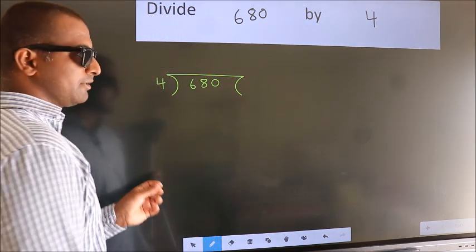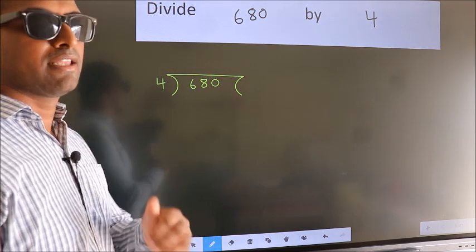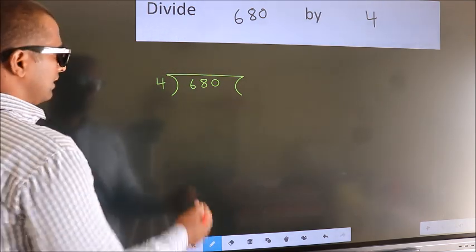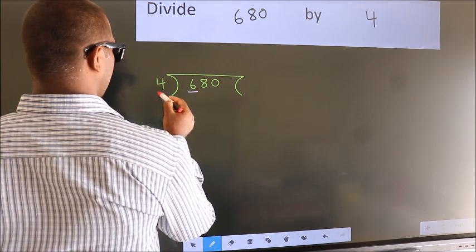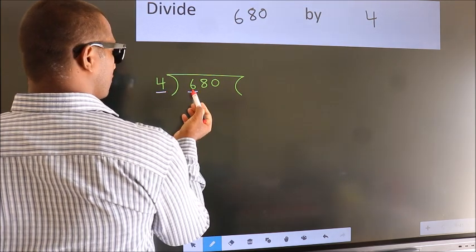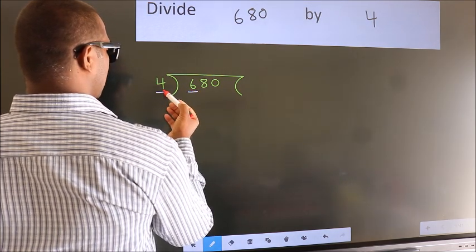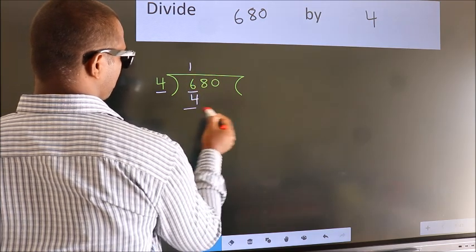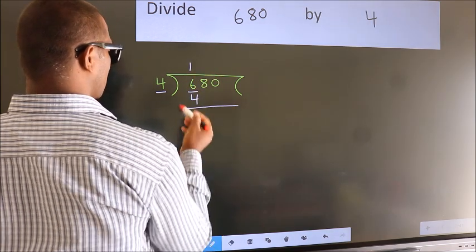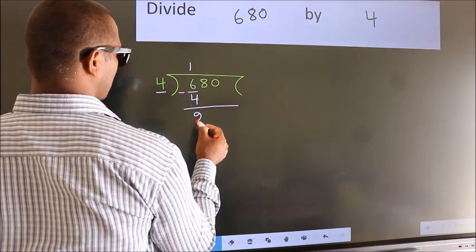This is your step 1. Next, here we have 6, here 4. A number close to 6 in 4 table is 4, once 4. Now, we should subtract. We get 2.